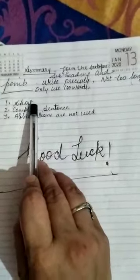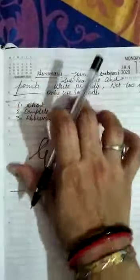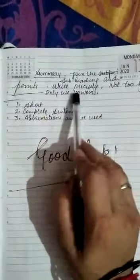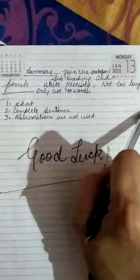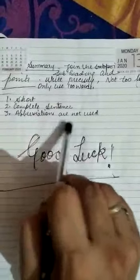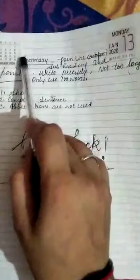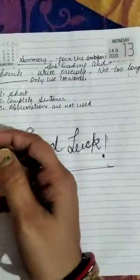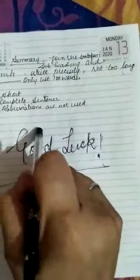Now, coming to the summary. Keep in mind that the summary will be short. Although the passage is quite long, the summary should be written very precisely and briefly — only in 100 words. In summary, you have to write complete sentences — do not use phrases here. Abbreviations are also not used in the summary. The best way to write the summary is to take all the subheadings, points, and subpoints you have written and join them together to write your summary.